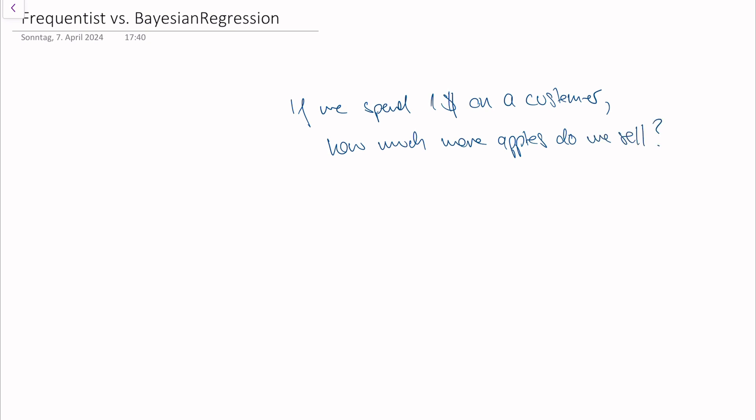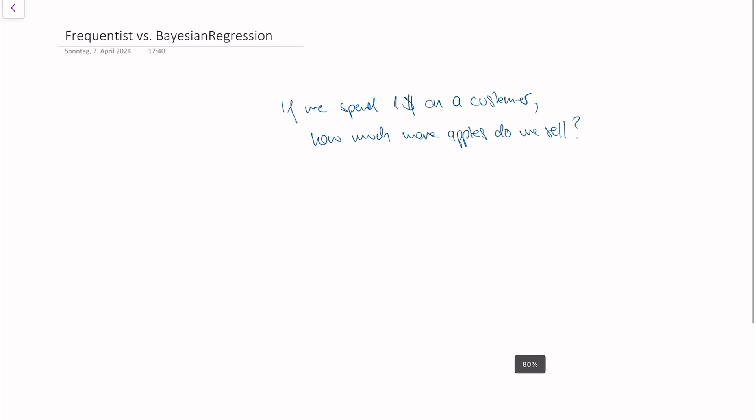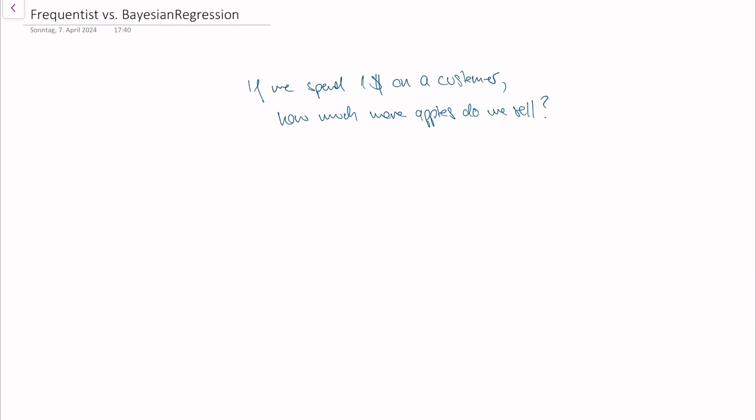He goes to you the statistician and you're supposed to answer that question. In all of statistics what we try to do is answer a question about all customers of the company, but we only have a very small sample of data. Let's just say we have three people for which we have data.